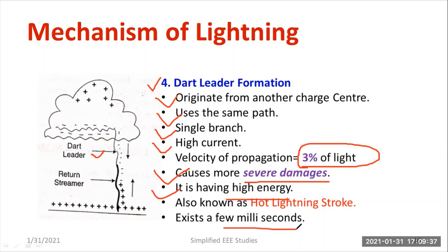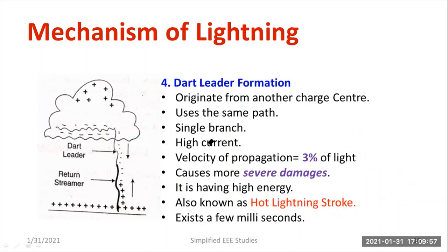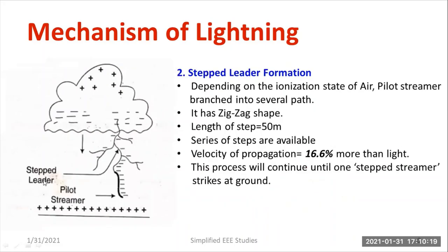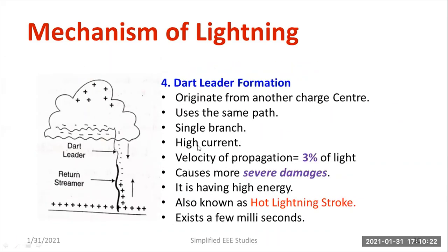The dart leader exists for a few milliseconds. Because it is very harmful and carries high energy, it is called a hot lightning stroke. In objective examinations, expect MCQ questions such as: which streamer is most severe — dart leader; which leader forms first — pilot streamer; which leader has a length of almost 50 meters — stepped leader.